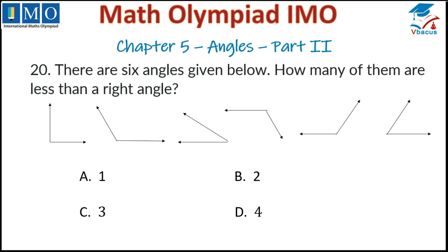Question number 20: There are 6 angles given. How many of them are less than a right angle? This is 90 degrees, this is obtuse, this is acute — that is one. This is obtuse, this is also obtuse, this is less than 90 degrees — that is a second acute angle. So two angles are less than a right angle. Option B is correct.